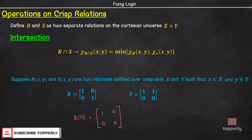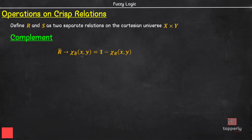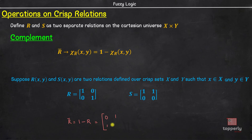Next, we have the complement operation. Here, the membership value Chi_R_complement(X, Y) is given by 1 minus Chi_R(X, Y). If we take our earlier relation R, R complement is given by 1 minus R, which equals: 1-1=0, 1-0=1, 1-0=1, 1-0=1, and 1-1=0.